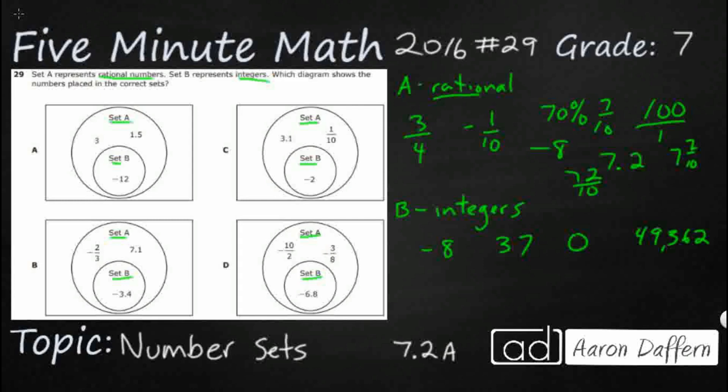Knowing all that, let's take a look at our options, A, B, C, and D. So A at the top has 3. Can that be turned into a ratio? Yes. 1.5 can be 1 and 5 tenths or 15 over 10. So that's looking good right there for rational numbers. And we've got a negative whole number. So A is looking pretty good.